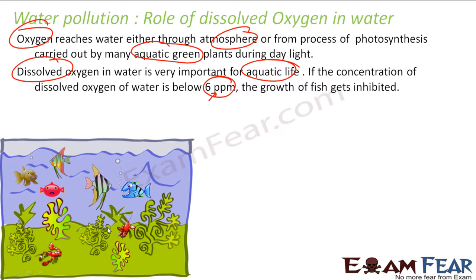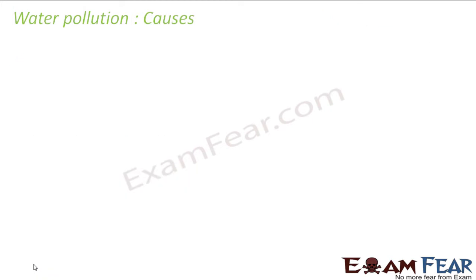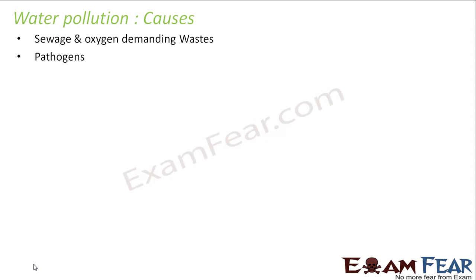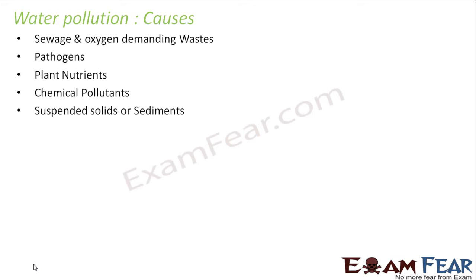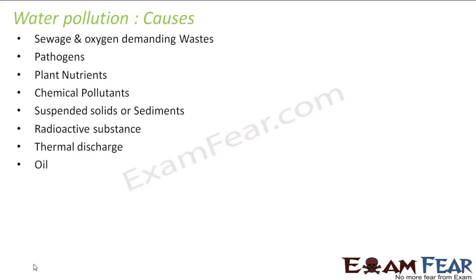There are two sources of dissolved oxygen in water: from the atmosphere, since oxygen is present there and dissolves into water; and from aquatic plants which, in morning sunlight, prepare oxygen through photosynthesis. This is critical for aquatic animals. The causes of water pollution include sewage, oxygen-demanding waste, pathogens, plant nutrients, chemical pollutants, suspended solids, radioactive substances, thermal discharge, and oil.